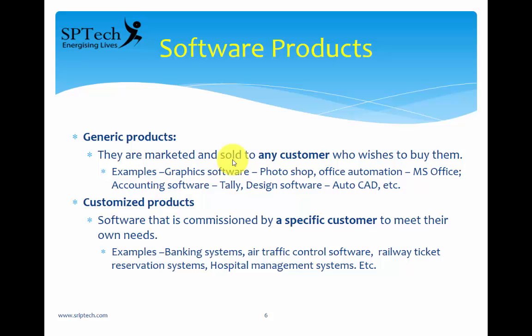We can think of any number of customized products. For example, a banker approaches a software development company and says build a software product to automate my entire banking system — that is a customized product. Or Indian Railways approaches a software company and says automate our entire railway ticket reservation system — that is also a customized product. Similarly, you have other customized products like airline reservation systems and hospital management systems. The basic idea is that software products can be classified into two types: generic products and customized products.